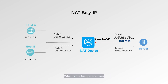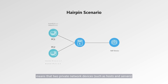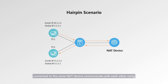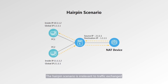What is the hairpin scenario? The hairpin scenario, also called NAT loopback, means that two private network devices, such as hosts and servers, connected to the same NAT device communicate with each other using public IP addresses that are mapped to their private IP addresses. The hairpin scenario does not involve mutual access using private IP addresses, and is irrelevant to traffic exchange between private network devices not processed by NAT.